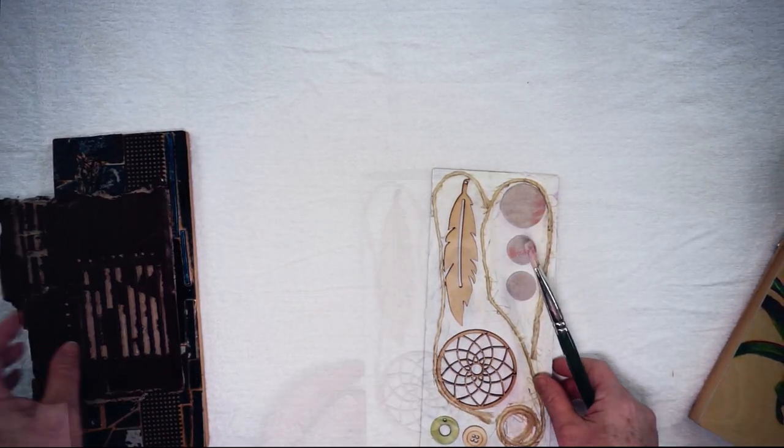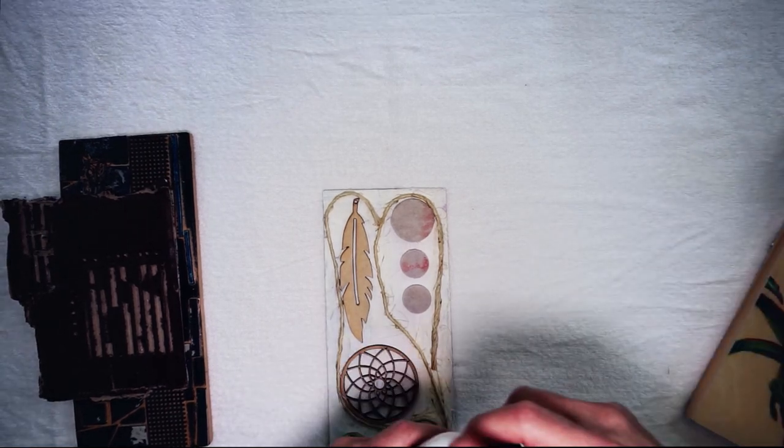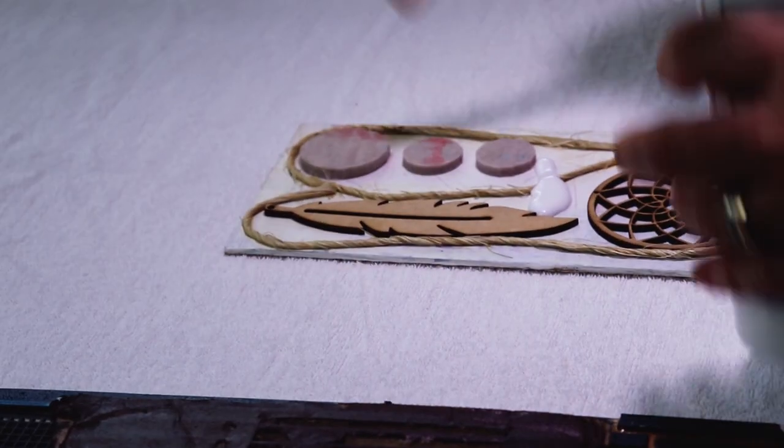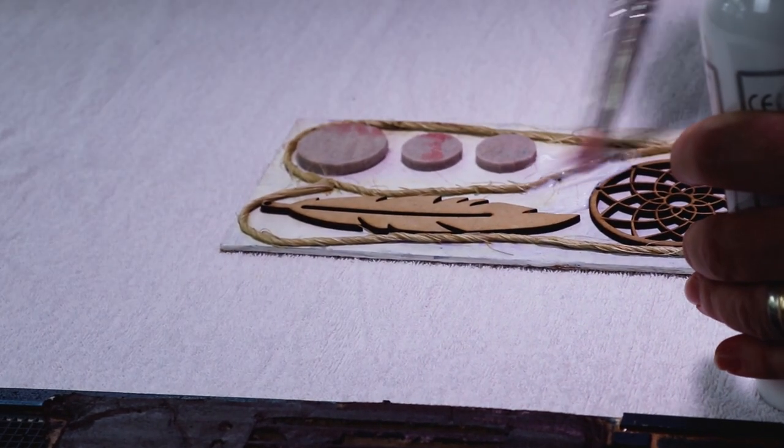So this one's been sealed. I also seal my corrugated cardboard stamps. This is the stamp that was on that first painting that we saw in this video. With your pouring medium, because it's thicker, you need to apply it with a stiff brush, not any of your good brushes.